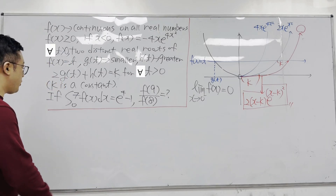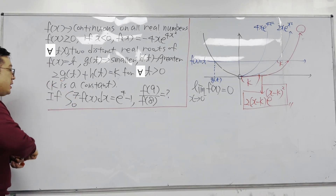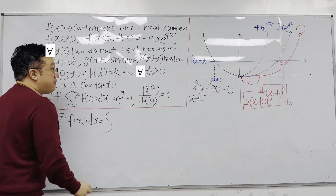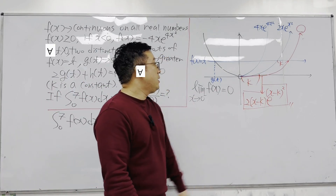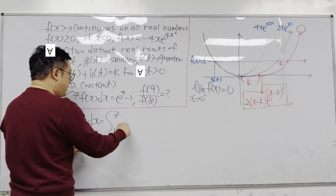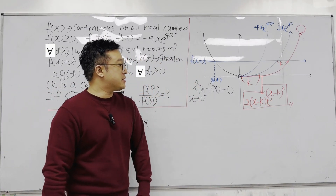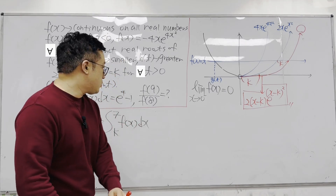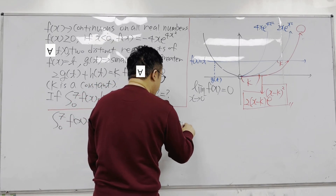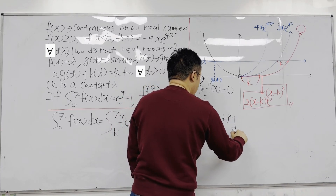The question gives the integral from 0 to 7 of f(x) dx equals e to the power of 4 minus 1. Because of the horizontal shifting, the effective integration starts at k, so this equals the integral from k to 7 of 2(x minus k) times e to the power of (x minus k) squared dx.